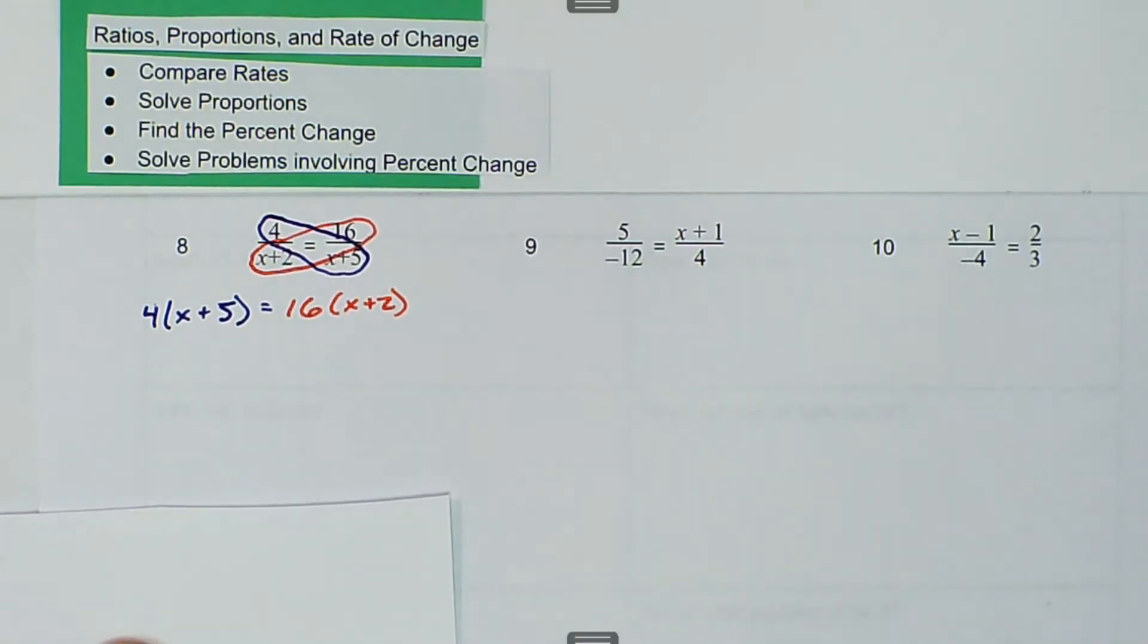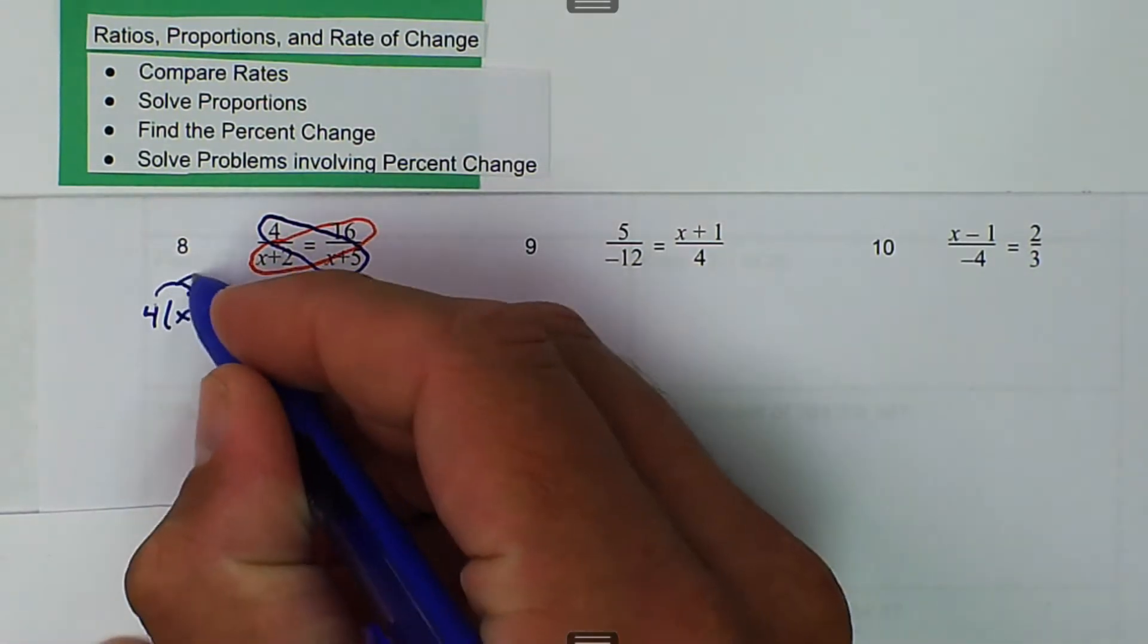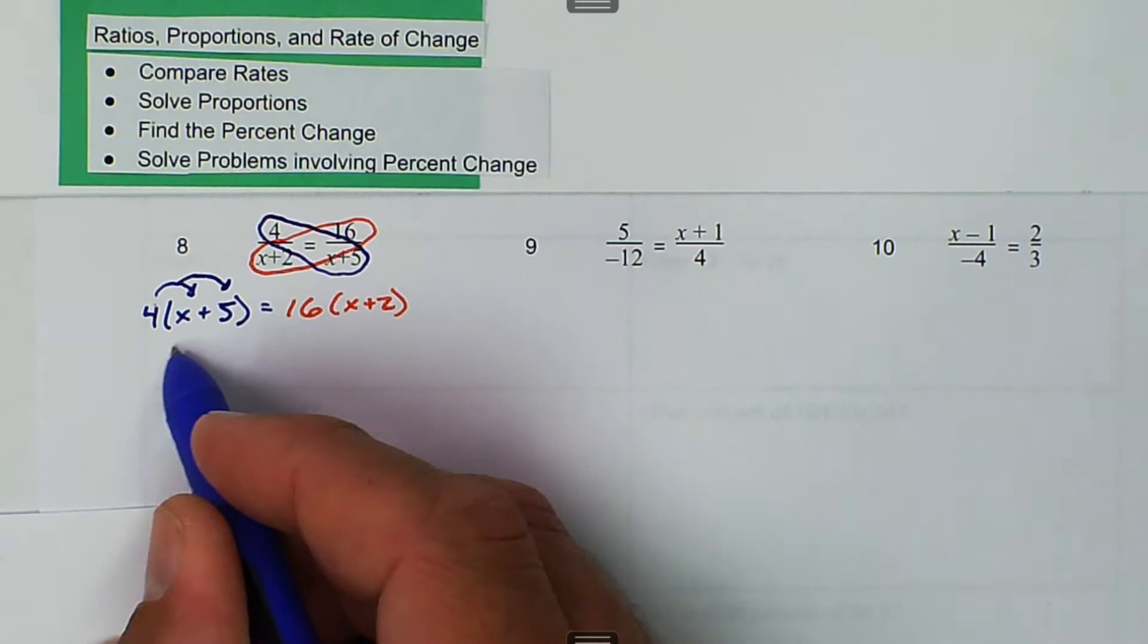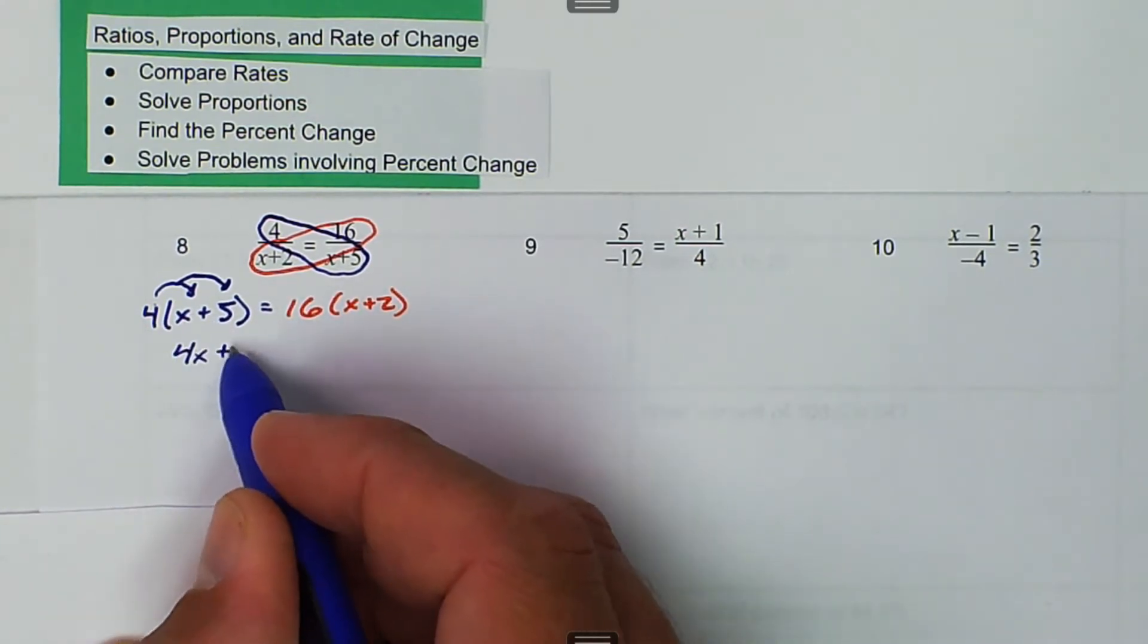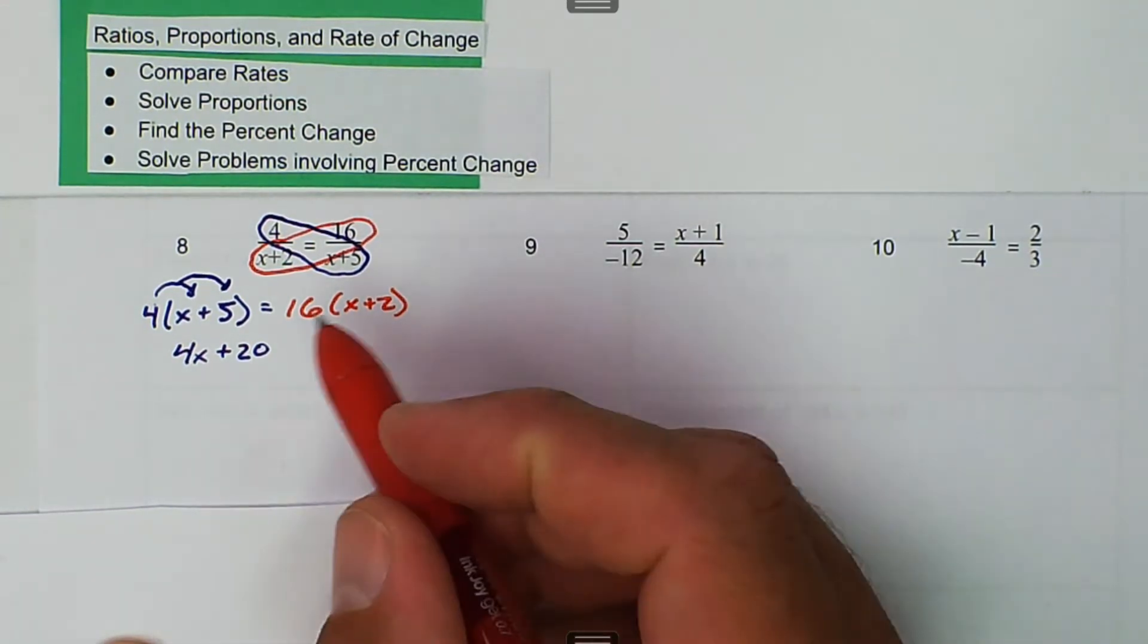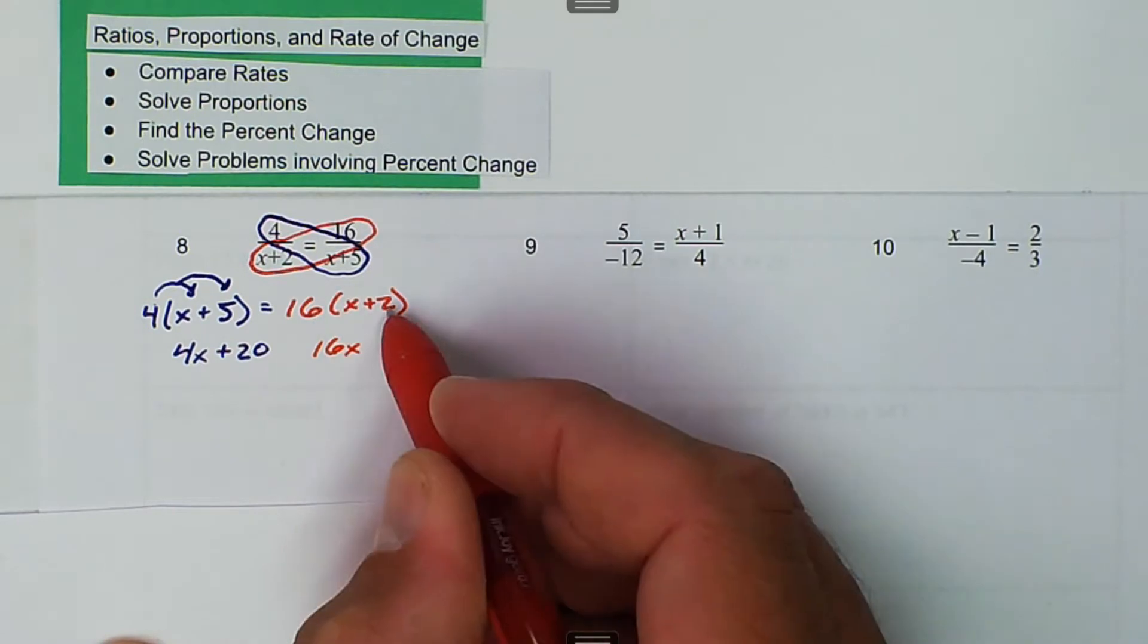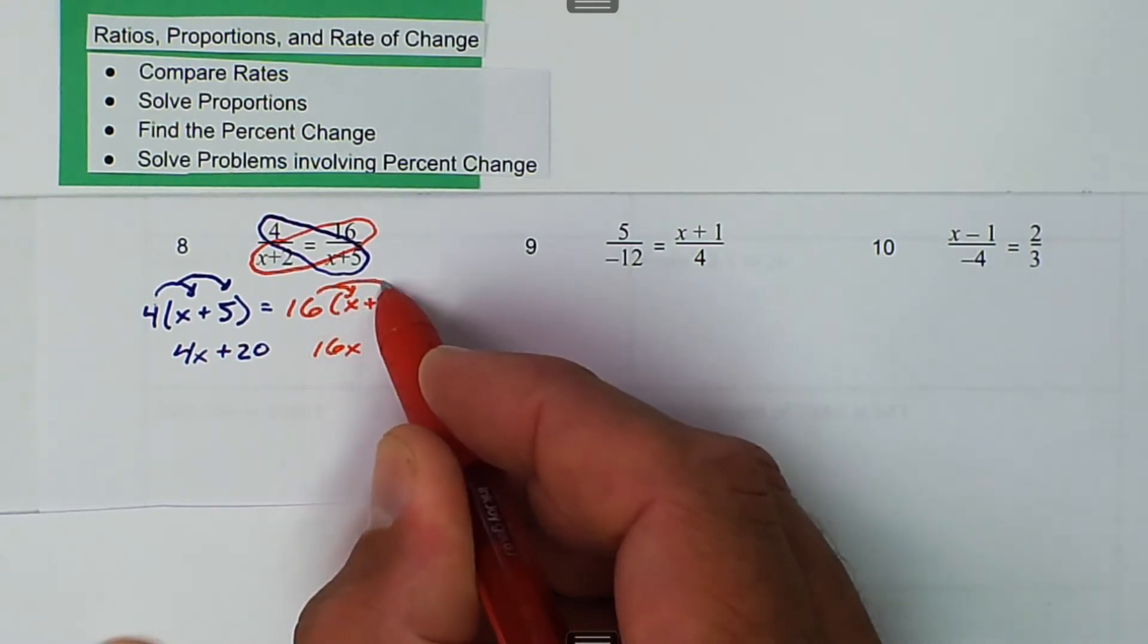So first thing is we've got to distribute. We're going to say 4 times x, 4 times 5. 4 times x is 4x, and 4 times 5 is 20. Then we can do the same thing. 16 times x is 16x, and 16 times 2 is 32.